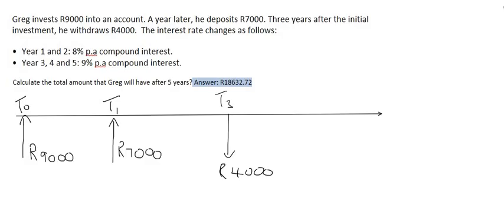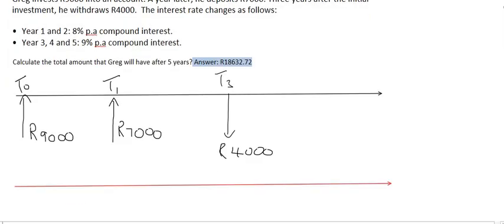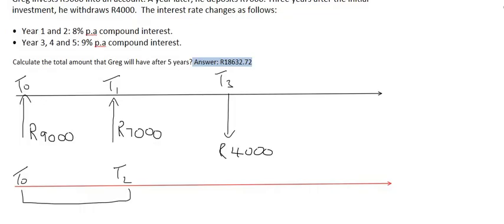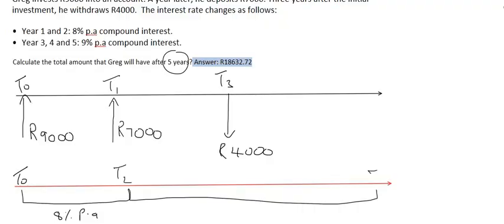Now we're going to do a separate timeline which will show us the interest rate changes. The interest rate changes are given in bullet point form. Years one and two — from the very beginning to t2 — the interest rate will be eight percent per annum. Years three, four, and five — right till the very end at t5, because it's a five-year question — the interest rate will be nine percent.